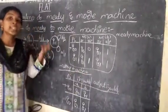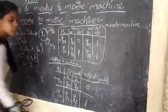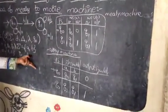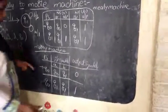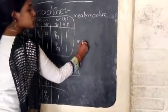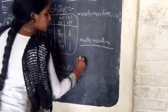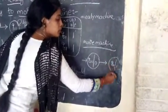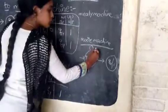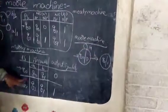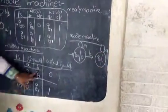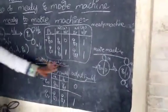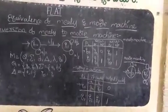The Mealy machine output is based on the present state. From the transition table, we draw the state diagram. Q0 on A goes to Q1, Q1 on B goes to Q1, and Q1 on B also goes to Q1.